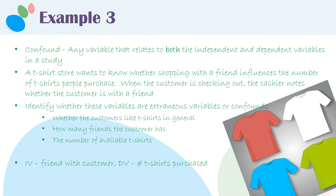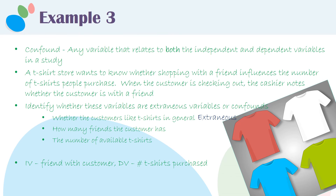The independent variable is whether the customer brings a friend in, and the dependent variable is the number of t-shirts purchased. Whether the customer likes t-shirts is probably not related to whether the customer brought a friend in, but it is likely related to how many t-shirts the customer purchased. So that's an extraneous variable.